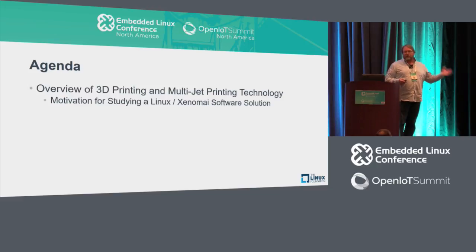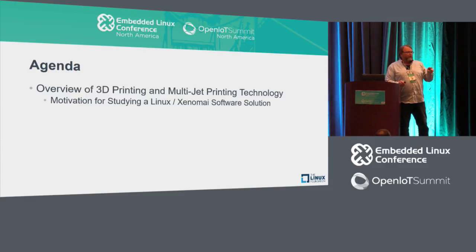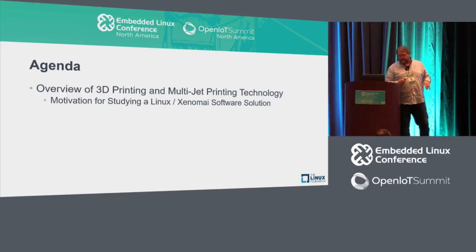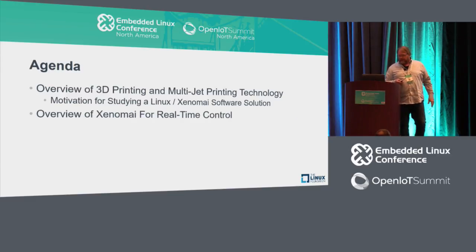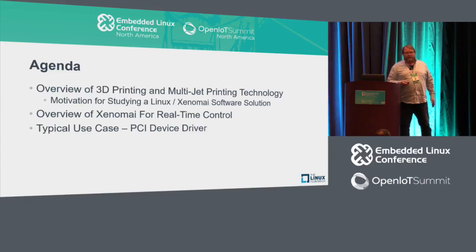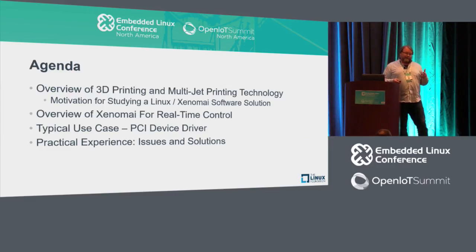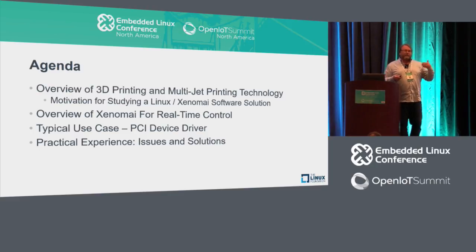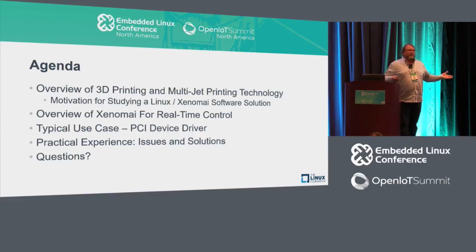Today I'll go over a little bit about 3D printing technology — I'm passing around some 3D parts that were printed on the printer we developed locally, just a few miles south of Portland in Wilsonville, where the 3D Systems branch office is. I'll do an overview of Xenomai, give a typical use case — in this case a PCI device driver — and I'll tell you about my practical experience taking an existing very large code base that's been running on a commercial RTOS and running it on Xenomai under Linux. Hopefully there'll be some time for questions.